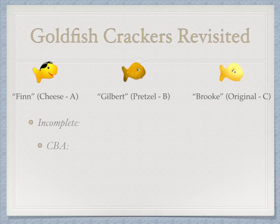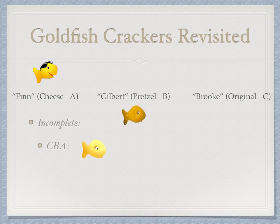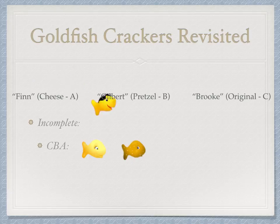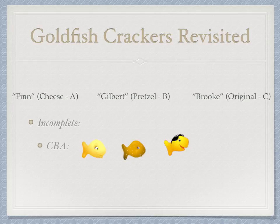Back to our goldfish crackers example. An incomplete design would have participant one get the order C, B, A — original goldfish cracker, followed by pretzel goldfish cracker, followed by cheese goldfish cracker — and that's all they get. They've experienced all three conditions. The next participant gets a different order, and the next gets another different order, ensuring all orders are accounted for while each participant experiences each condition only once.